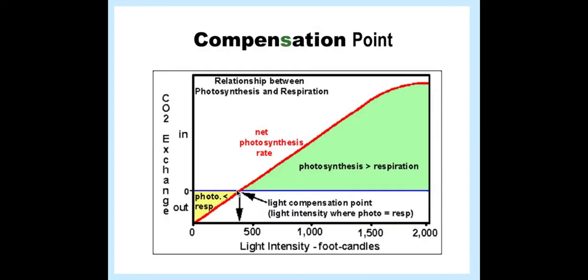At this point here on the graph, the rate of photosynthesis is equal to the rate of respiration because the volume of carbon dioxide going into the plant is the same as the volume going out. This is known as the compensation point on the graph.